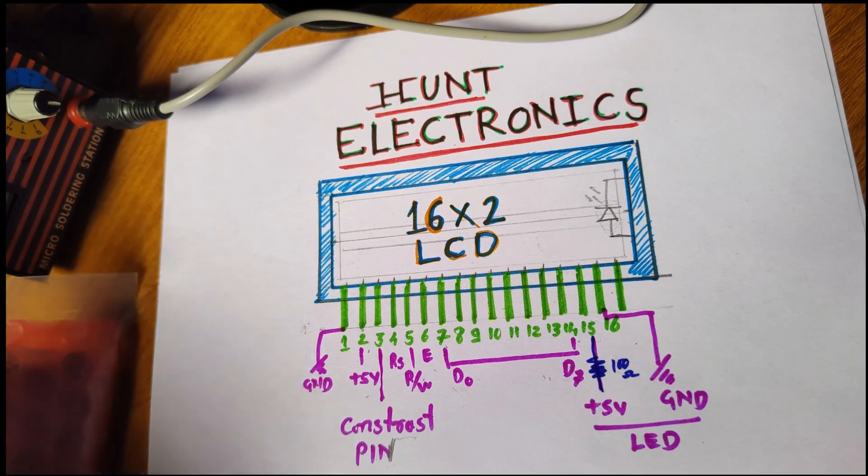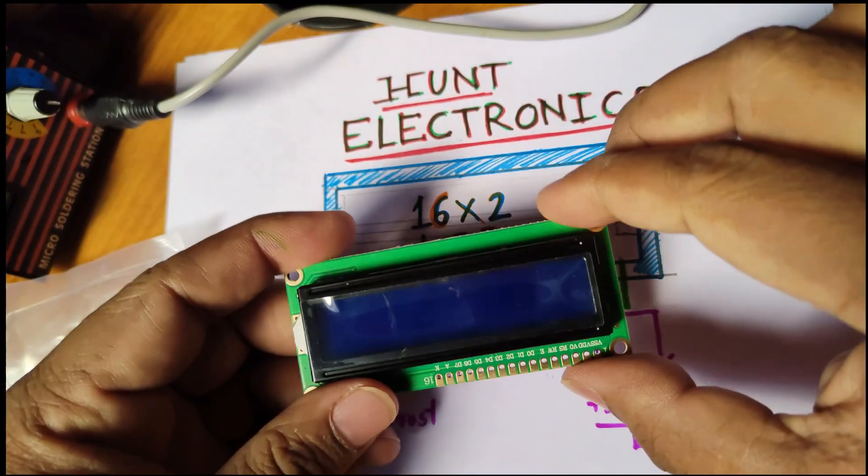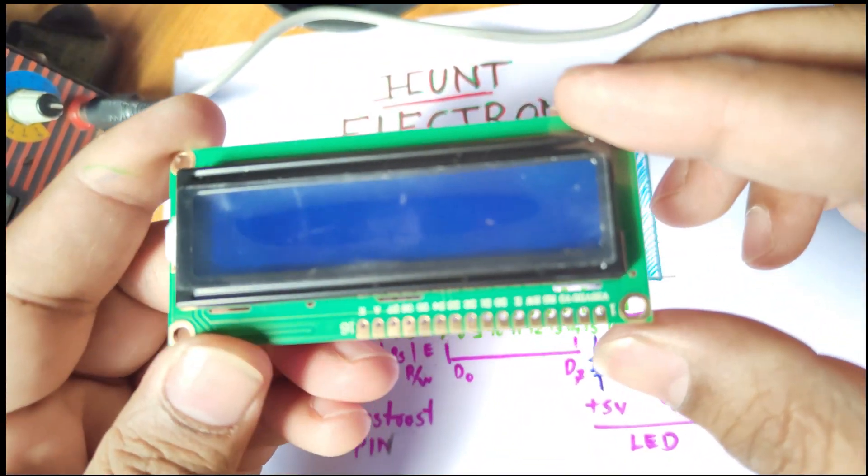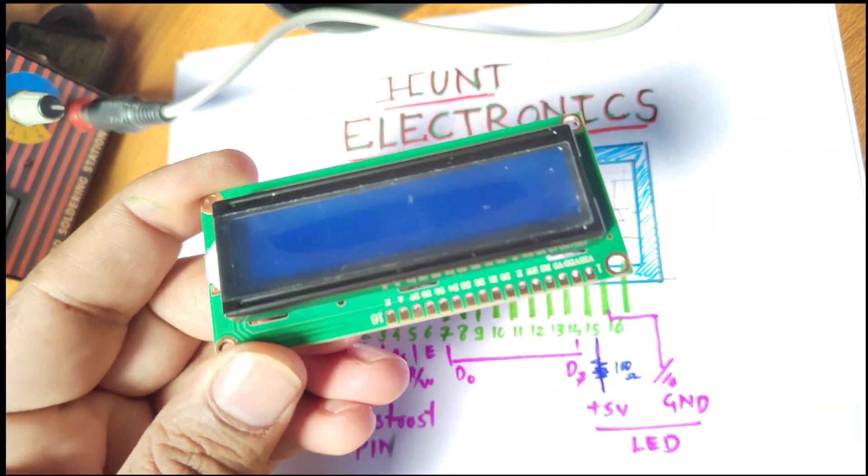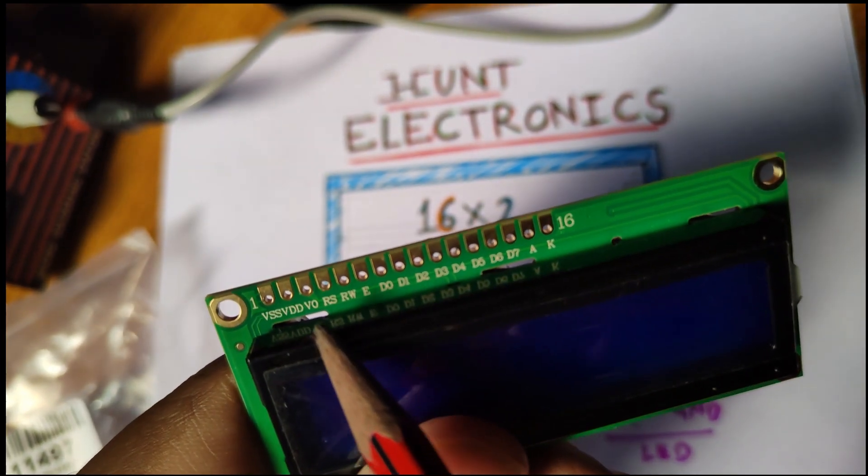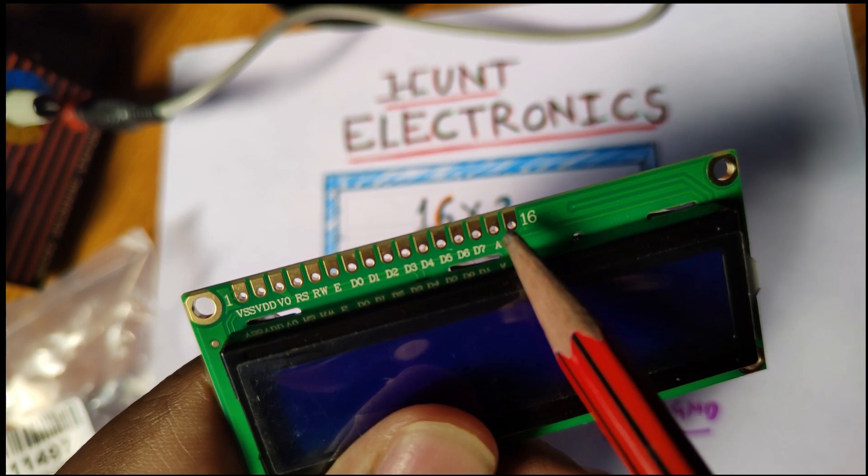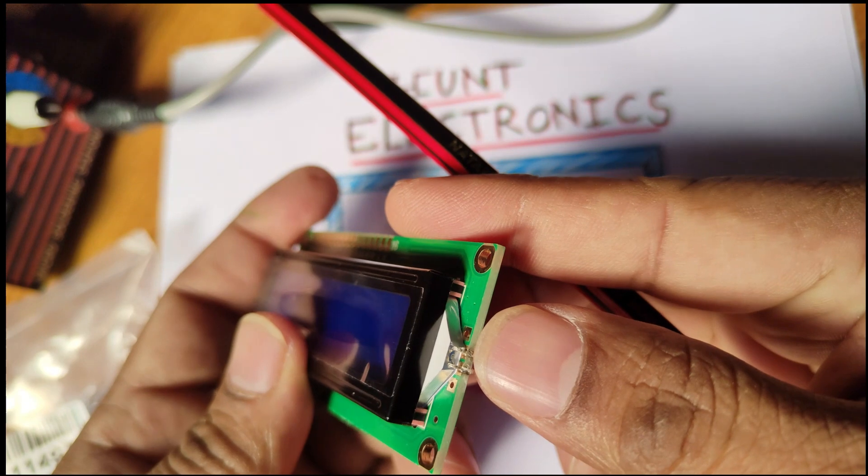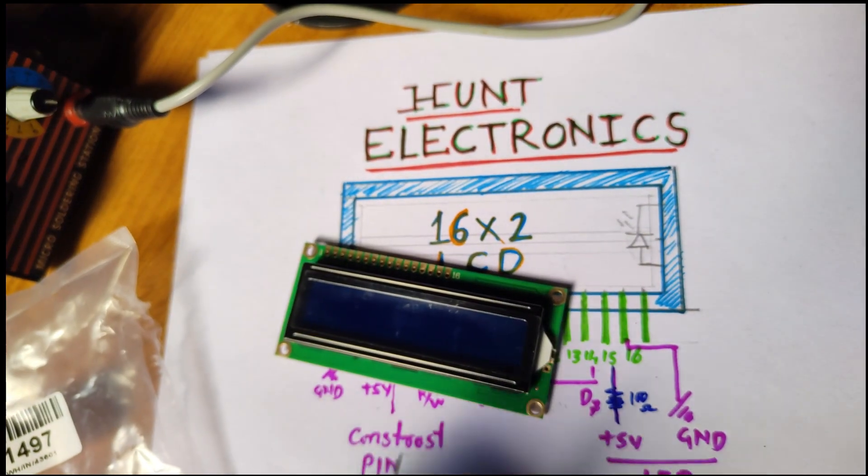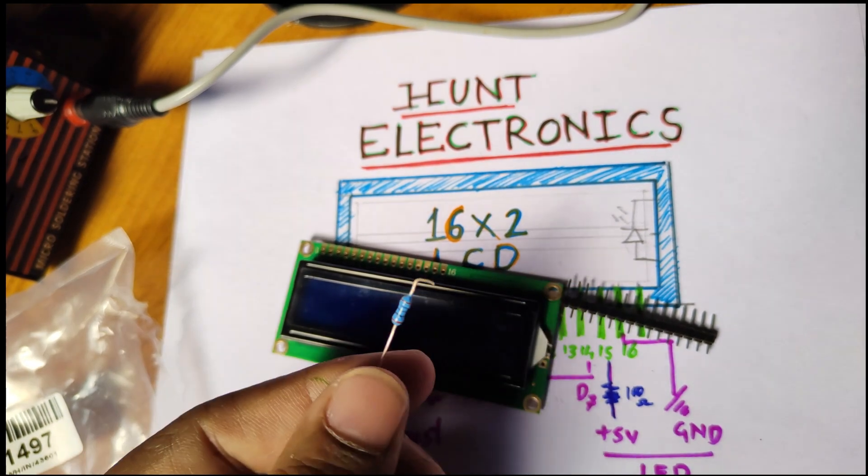I have ordered this from RoboIn. This is the 16 by 2 display. You can see here VCC, VDD, then read/write, chip enable, then seven data pins, and this A and K is anode and cathode of the backlight LED. There is one LED at the backlight. Now let us see how to do the soldering.